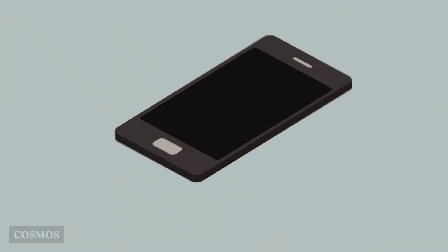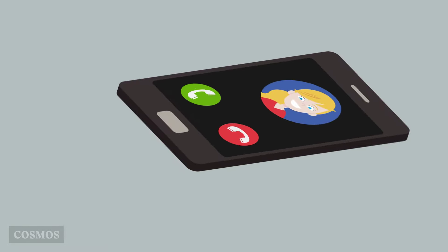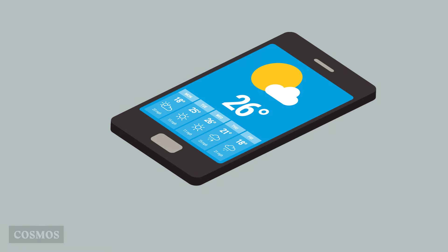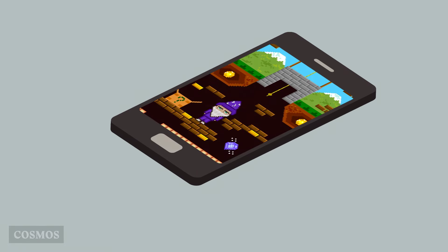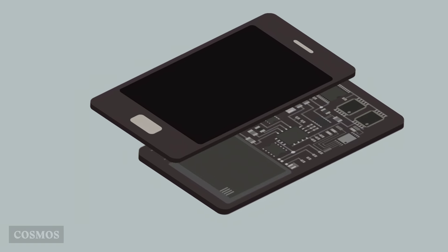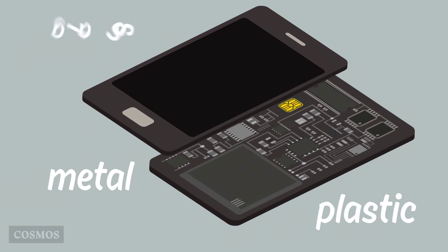For example, smartphones are resources because you can use them to call your friends, check the weather forecast, or play games. They're made up from a whole range of plastic, metal and glass parts.